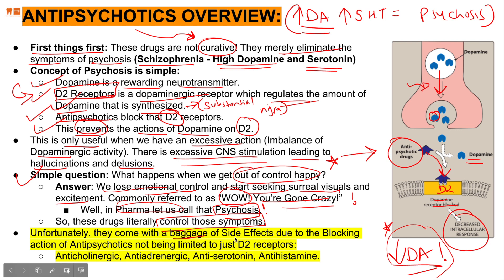Unfortunately antipsychotics come with a significant baggage of side effects because their blocking actions are not limited to just D2 receptors. Antipsychotics also block anticholinergic, anti-adrenergic, anti-serotonin, and anti-histamine activities and more. So while they eliminate psychosis symptoms when attached to D2 receptors, all other receptor interactions are essentially side effects.